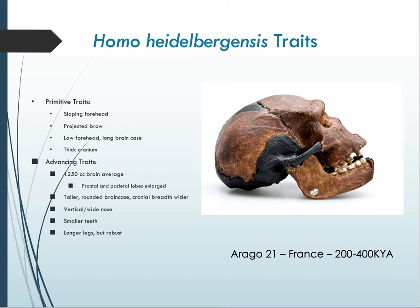For Homo heidelbergensis, let's look at the traits. Primitive traits shared with ancestors include a sloping forehead behind the projected brow ridge, a long low brain case, and a relatively thick cranium — all Homo erectus-like traits they're retaining. The brain size, however, has gotten larger: 1,250 cubic centimeters on average, compared to about 1,050 for Homo erectus. The frontal lobe is where all higher-order thinking takes place: thought, planning, memories, reasoning, and impulse control.